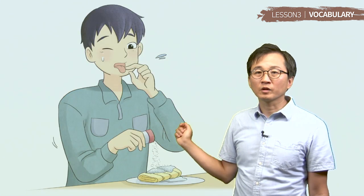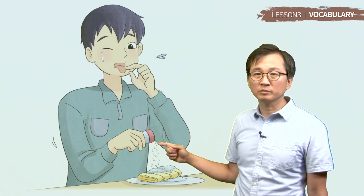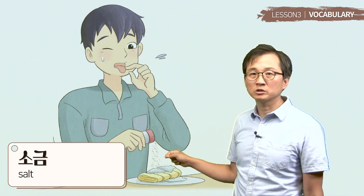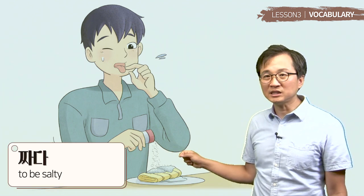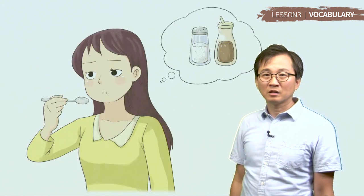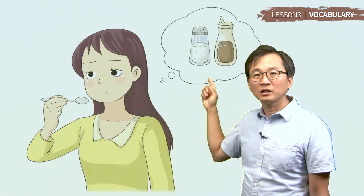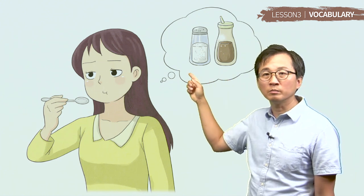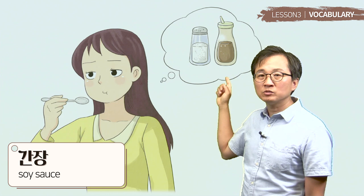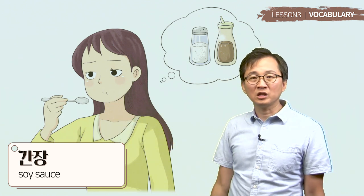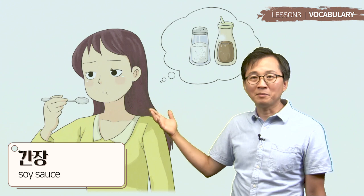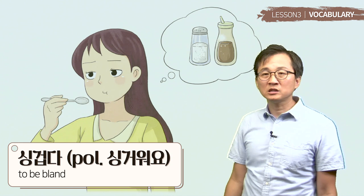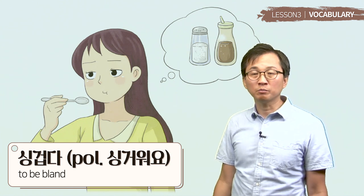그 다음에 이거는 소금이네요. 소금 그러면 salt. 소금이 너무 많아요. Too much salt. 그러면 salty: 짜다. 그 다음에 she is thinking of salt and soy sauce. Soy sauce는 간장. It seems like this food is not salty enough for her. To be bland 그러면 싱겁다. 싱거워요. Bland.